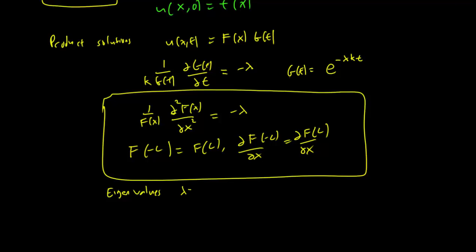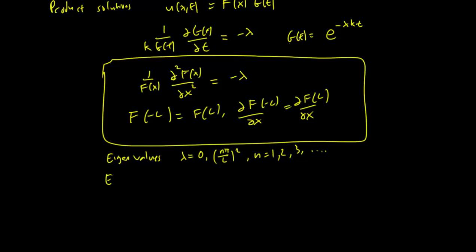We have lambda equals 0 and also (nπ/L)² for n = 1, 2, 3 and so on. And the eigenfunctions for lambda equals 0 is 1.